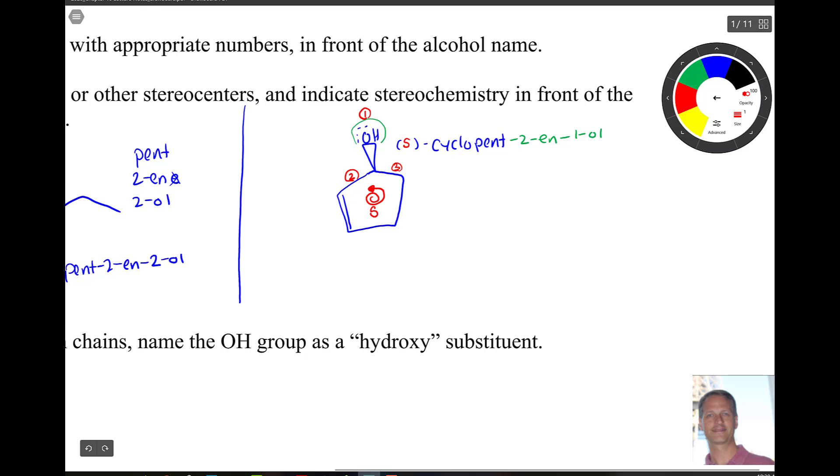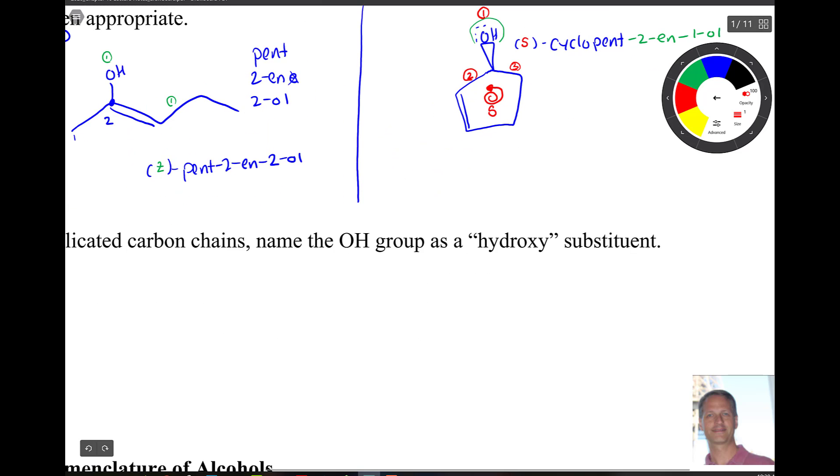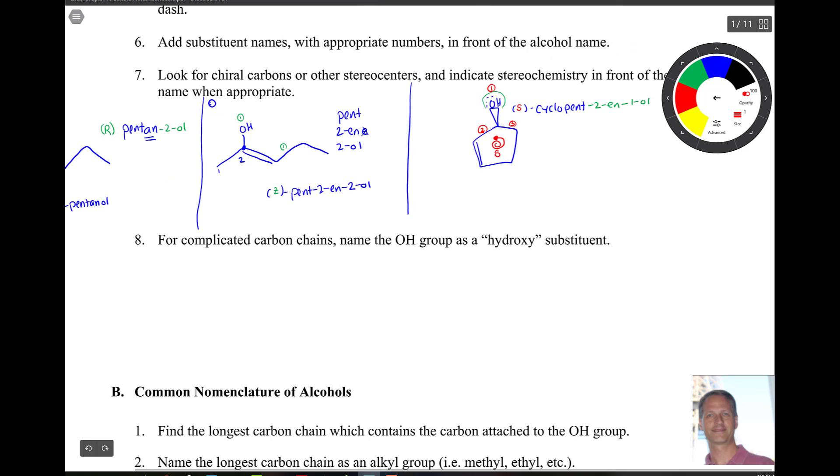All right. Now there's some common things that come up here, some common nomenclature that we need to know too. So for complicated carbon chains, the OH group is named as a hydroxy group. So what that means is that if there's a higher priority functional group present, then the OH is called a hydroxy group.